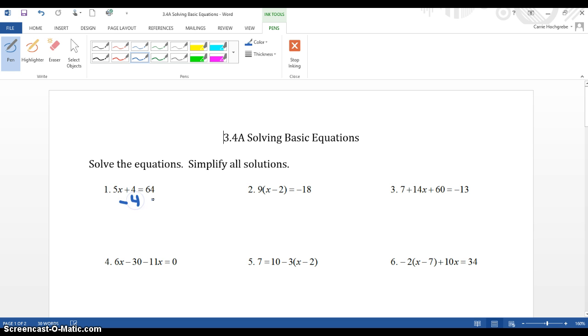Okay, I'm going to subtract 4 from both sides of my equation. I now end up with 5x equals 60. I may realize that's a little thick, so I'll grab a thinner pen. Divide by 5, divide by 5, so x is equal to 12.